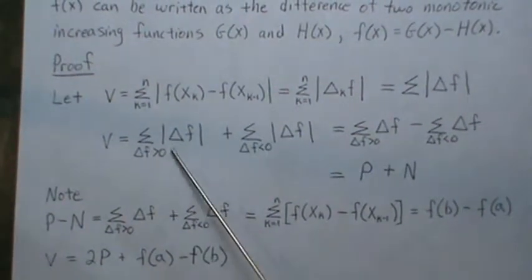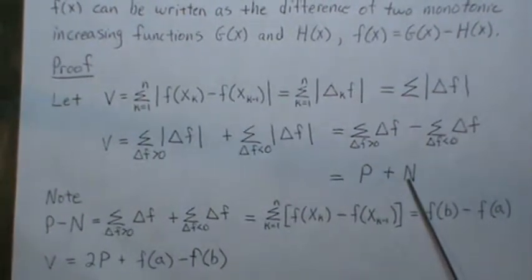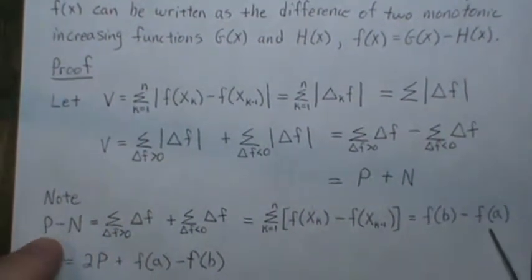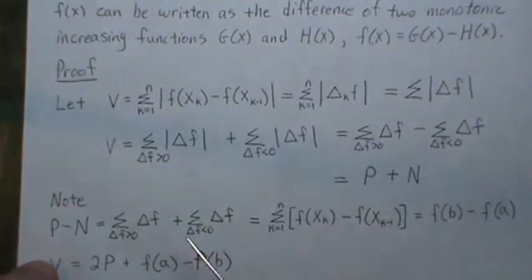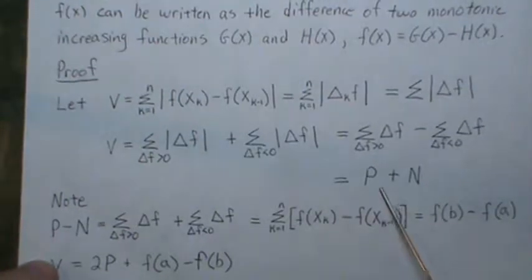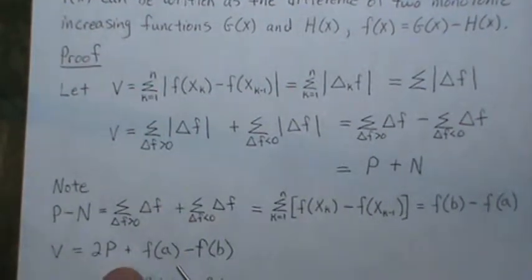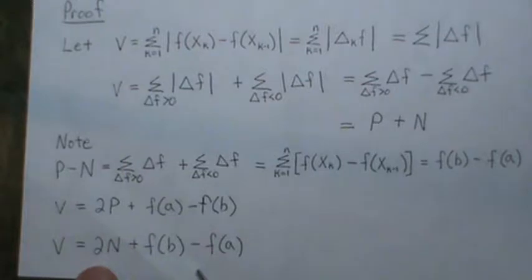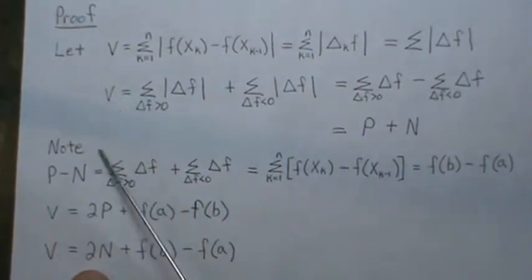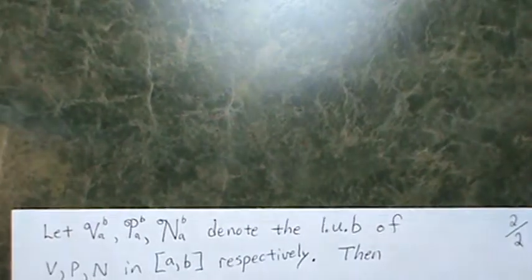For this statement we have v equals p plus n, and we also have p minus n equals f(b) minus f(a). These are two equations. Adding them together gives us an expression we can simplify, and subtracting them similarly lets us solve for p and n individually, giving us explicit formulas for each.